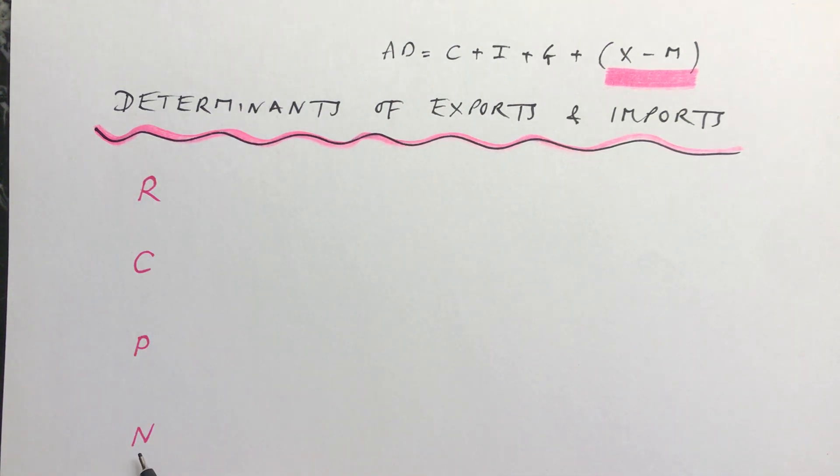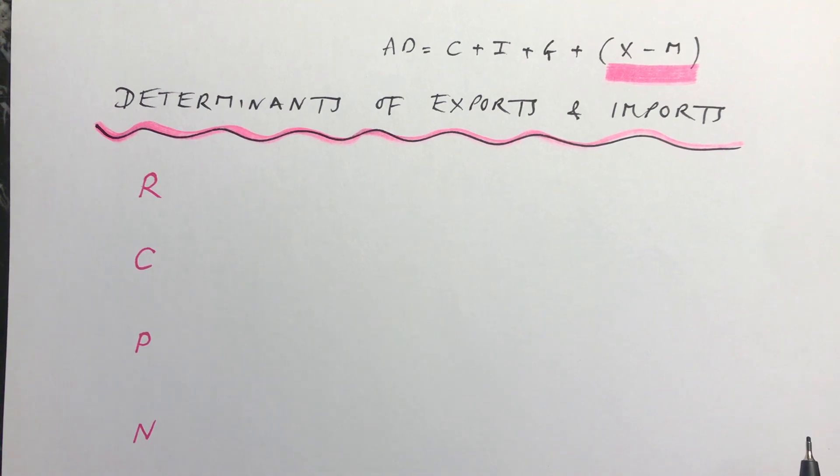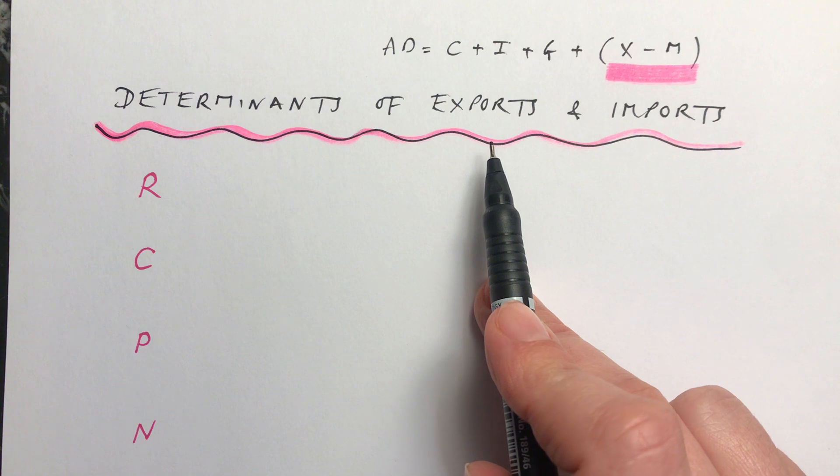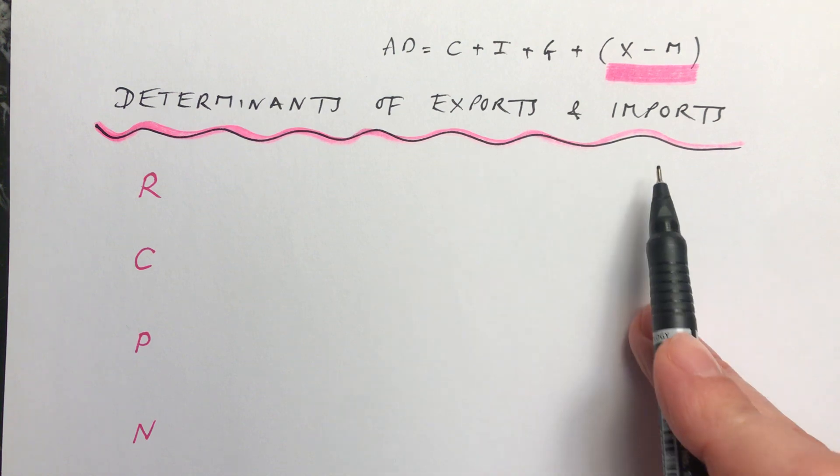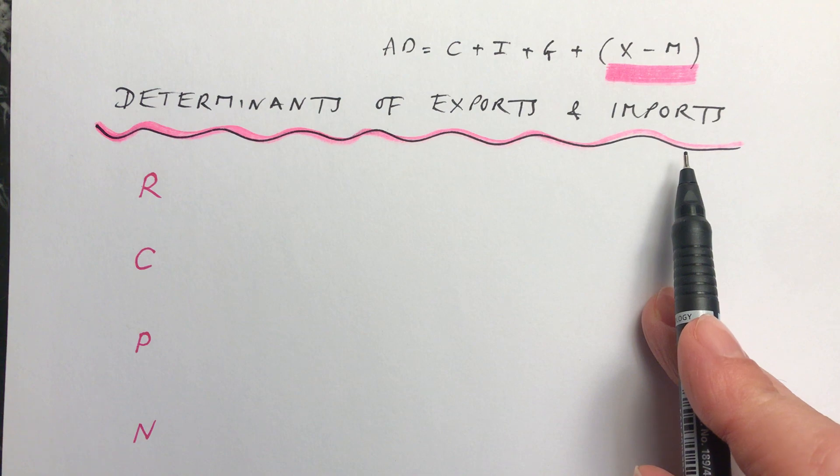That section is a bit of aggregate demand about exports and imports. What you need to remember is RCPN, these are the four main different areas. Exports are things that you are selling to other countries, and imports are things that you are bringing in from a different country.